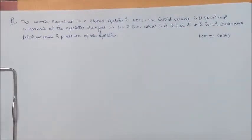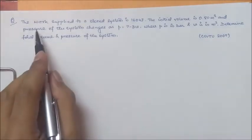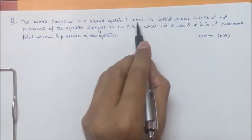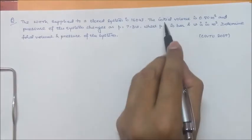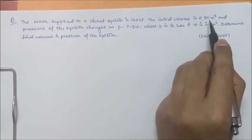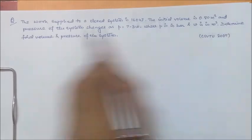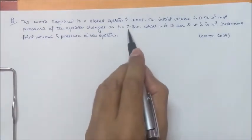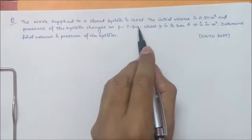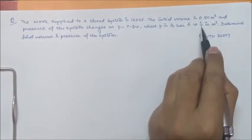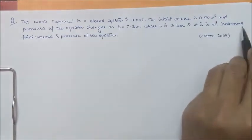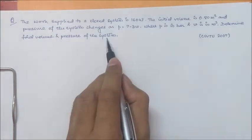In this video lecture, we will try to solve a question which has been asked in CSVTU University exam in 2007. The question is like this: the work supplied to a closed system is 160 kilojoule. The initial volume is 0.80 meter cube and pressure of the system changes as P equal to 7 minus 3V, where P is in bar and V is in meter cube. Determine final volume and pressure of the system.